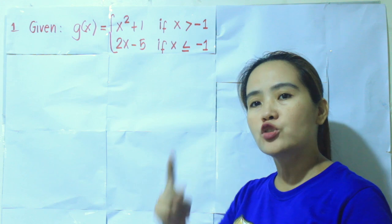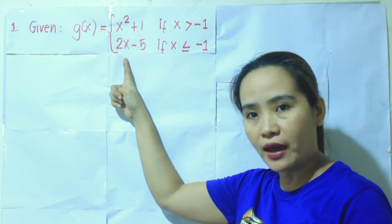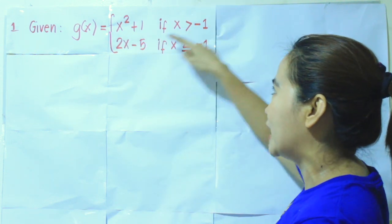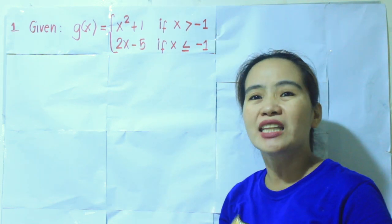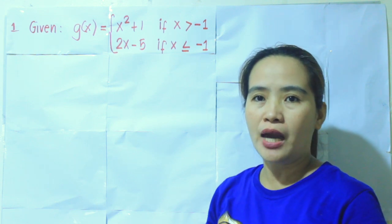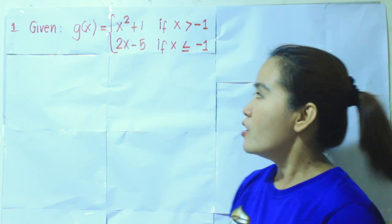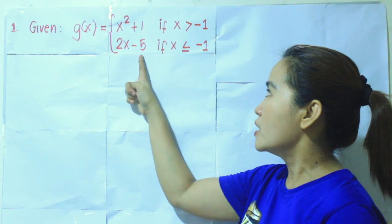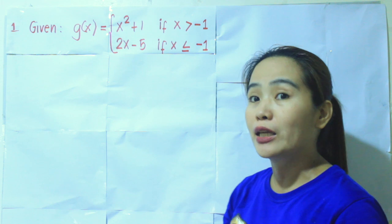So we have two sub-functions: x squared plus 1 and 2x minus 5. The specified domain for x squared plus 1 is x is greater than negative 1. For the second sub-function 2x minus 5, the specified domain is x is less than or equal to negative 1.